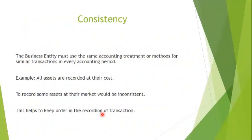The next concept is consistency, which states that the business entity must use the same accounting treatment or methods for similar transactions in every accounting period. For example, we record all assets at their cost — whatever it cost us, that is what we write into the accounts. If we buy a motor car for a hundred thousand dollars, we will write it in the books of the business as one hundred thousand dollars.